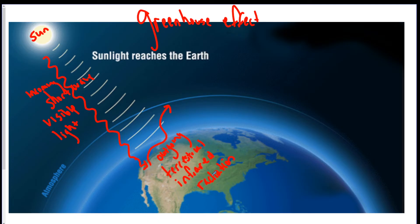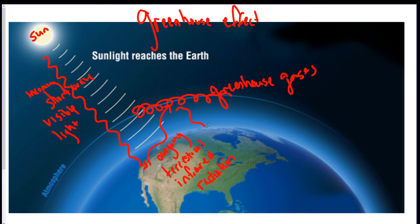This outgoing terrestrial infrared radiation ends up getting trapped by greenhouse gases in our atmosphere, which makes the temperature stay up. Some of it does get out and go back into space, which is fine — we don't want all of it trapped, just enough to sustain our current conditions. So the idea is: incoming shortwave visible light hits the ground, gets absorbed, and is re-radiated as outgoing terrestrial infrared radiation, which gets trapped.